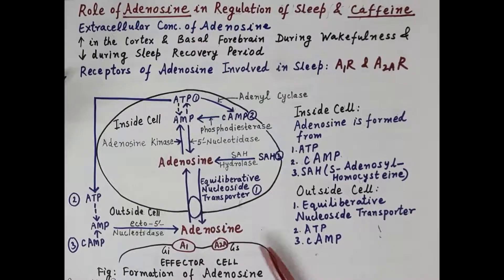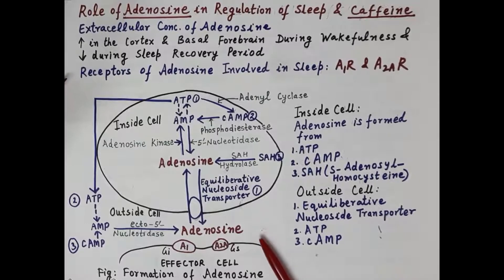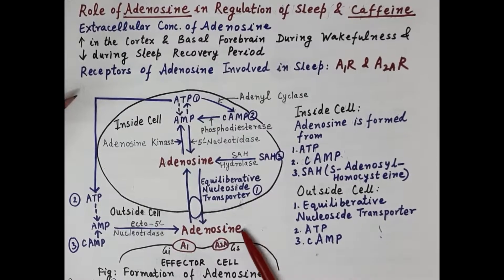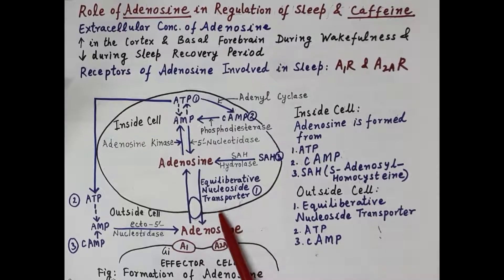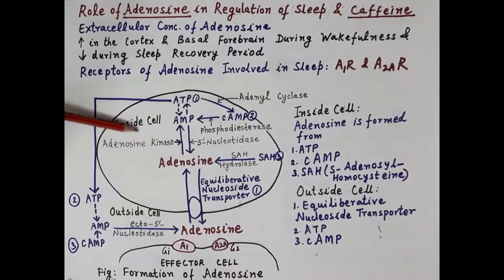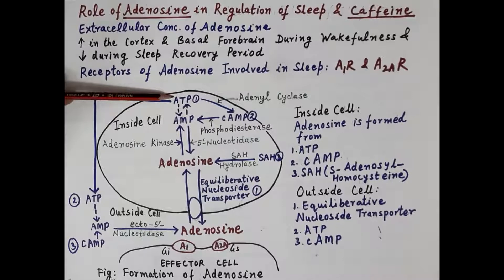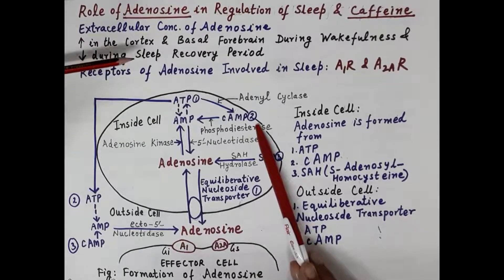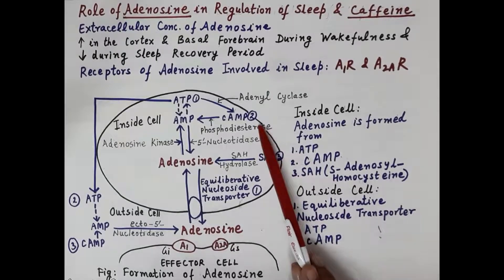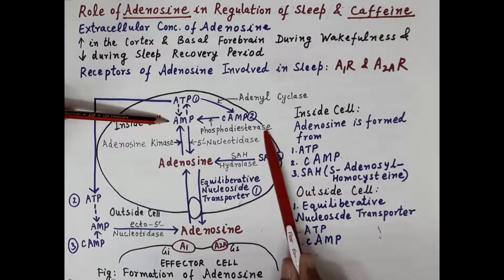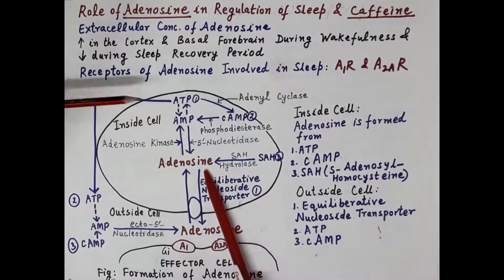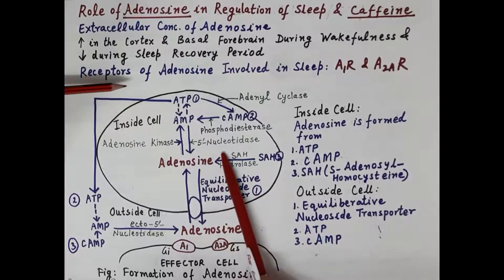This diagram exhibits the formation of adenosine and explains how its level rises during wakefulness. Inside the nerve cell, adenosine is formed from three sources. First, ATP (adenosine triphosphate) is converted into cyclic AMP by the enzyme adenyl cyclase, then cyclic AMP is converted into AMP (adenosine monophosphate) by phosphodiesterase, and AMP is further broken down to release adenosine by the enzyme 5'-nucleotidase.